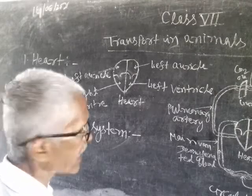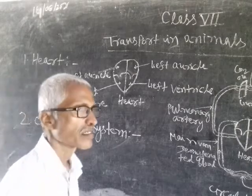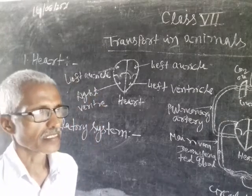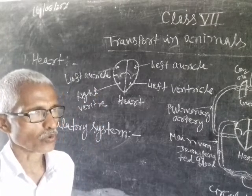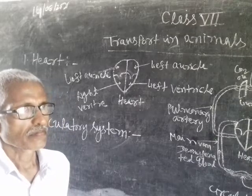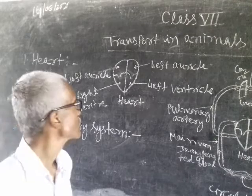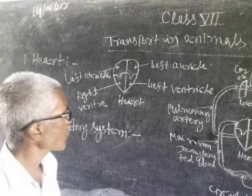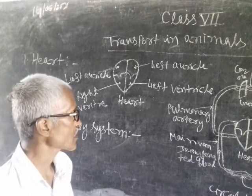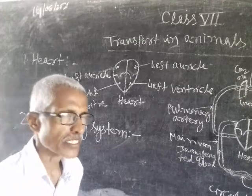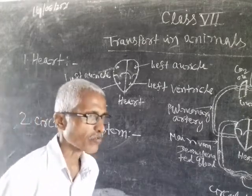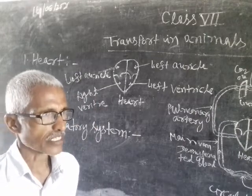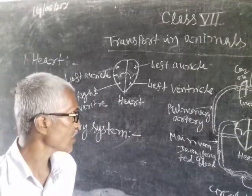Heart is an organ which pumps blood in our whole body through blood vessels. Heart has 4 chambers. Upper 2 chambers are called auricles and lower 2 chambers are called ventricles.